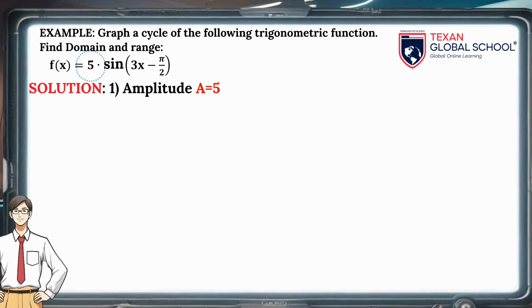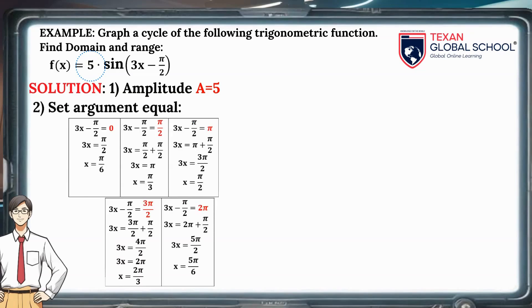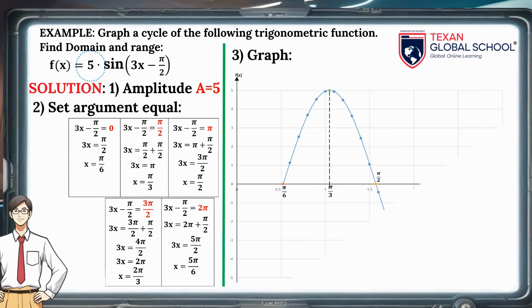Now set the argument 3x − π/3 equal to 0, π/2, π, 3π/2, and 2π. To graph, simply copy the behavior of the sine function, but with an amplitude of 5 and the values obtained.